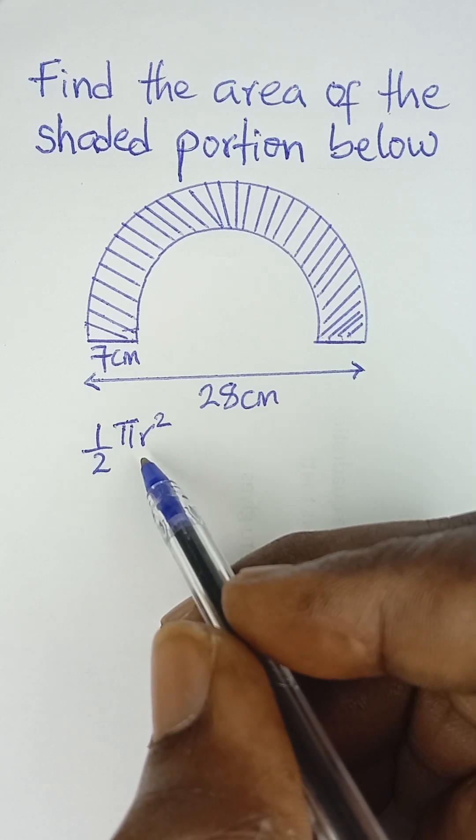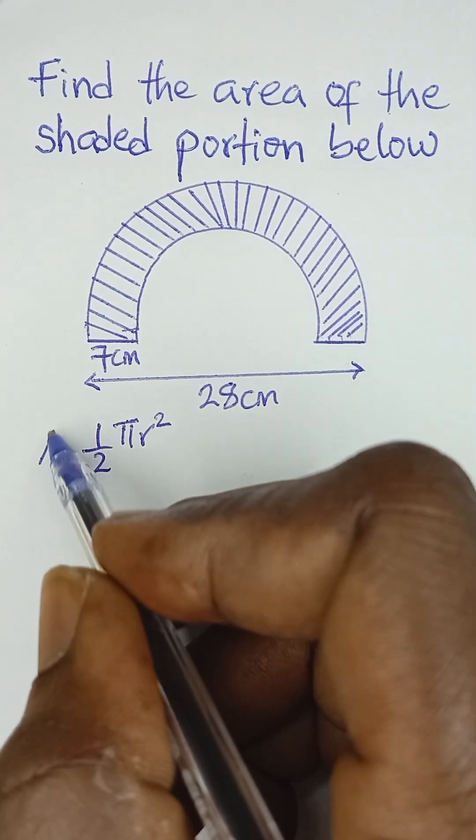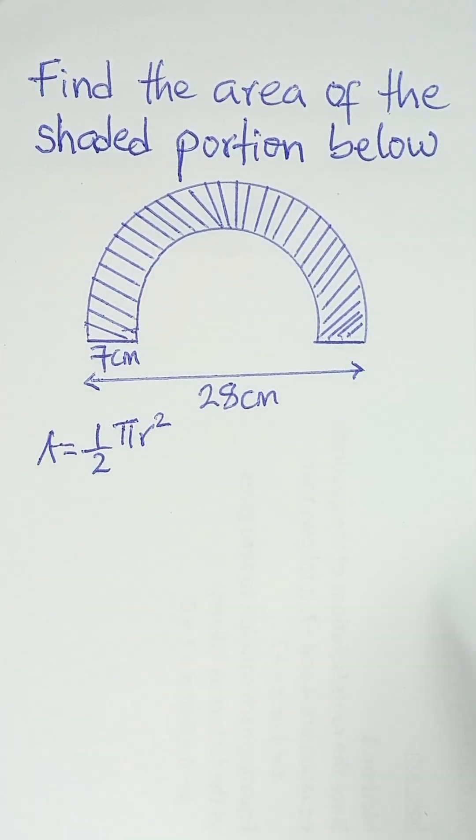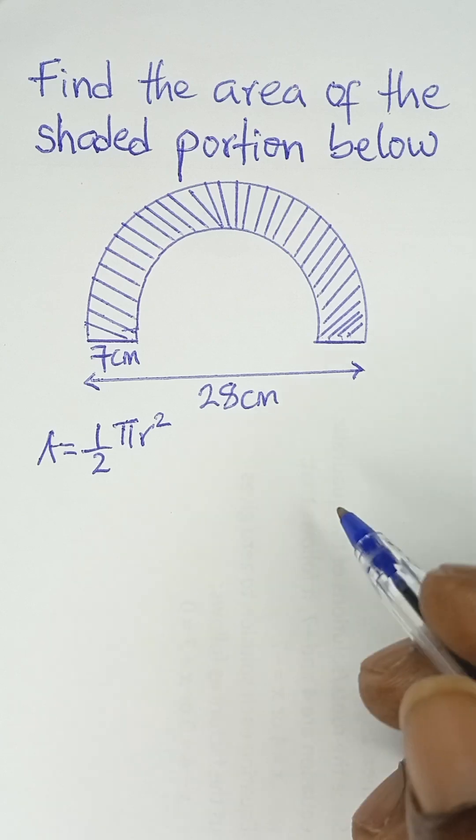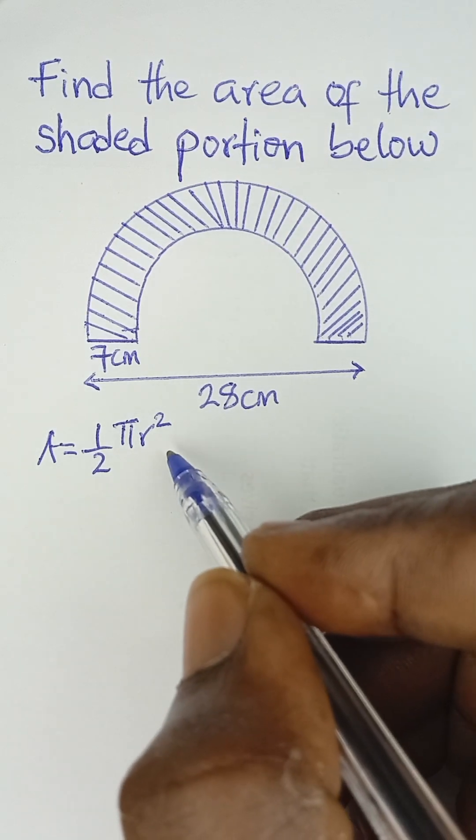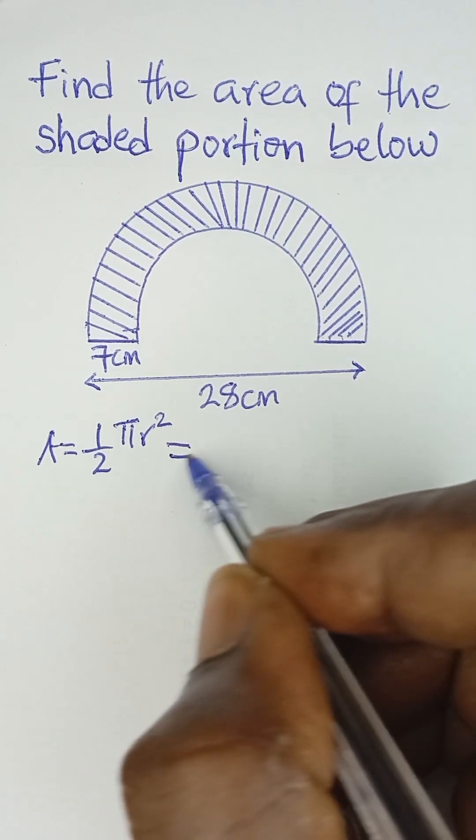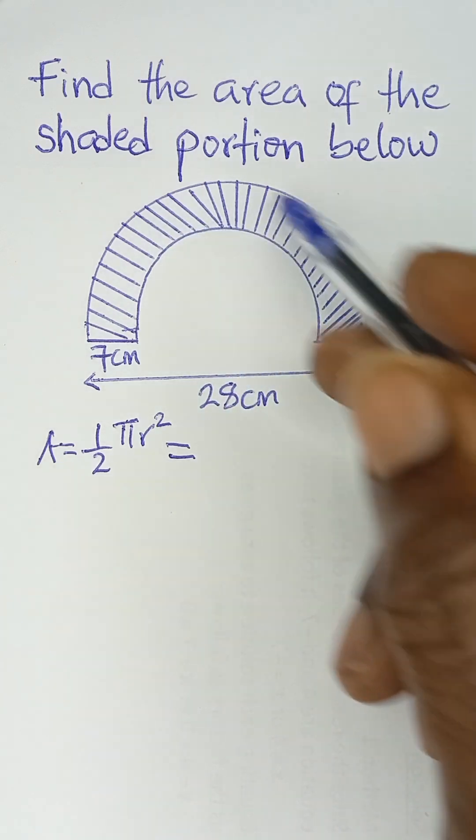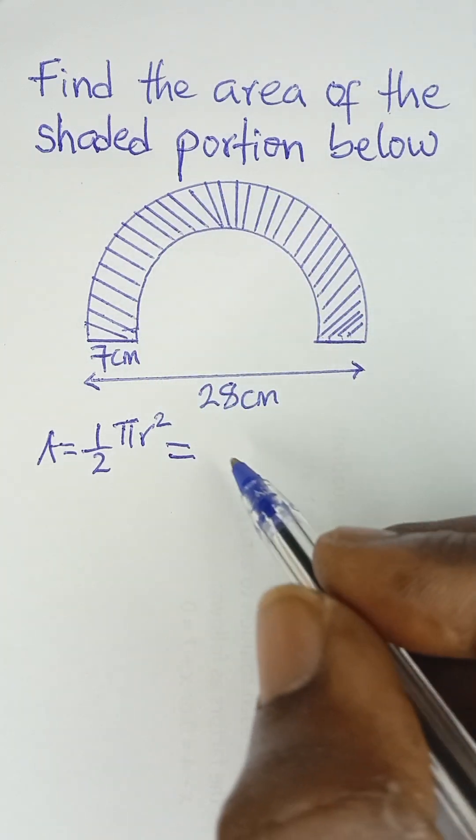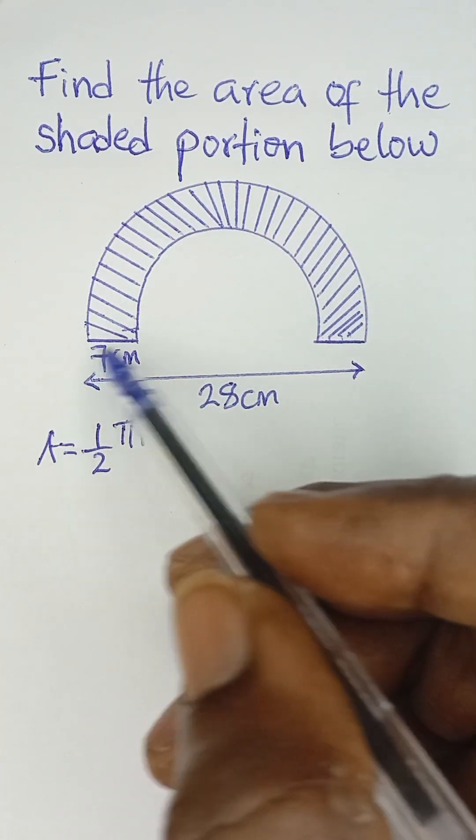So this is the formula for the area of a semi-circle. Now, for us to find the area of this full semi-circle, the complete semi-circle, what we need to do is to take the radius.